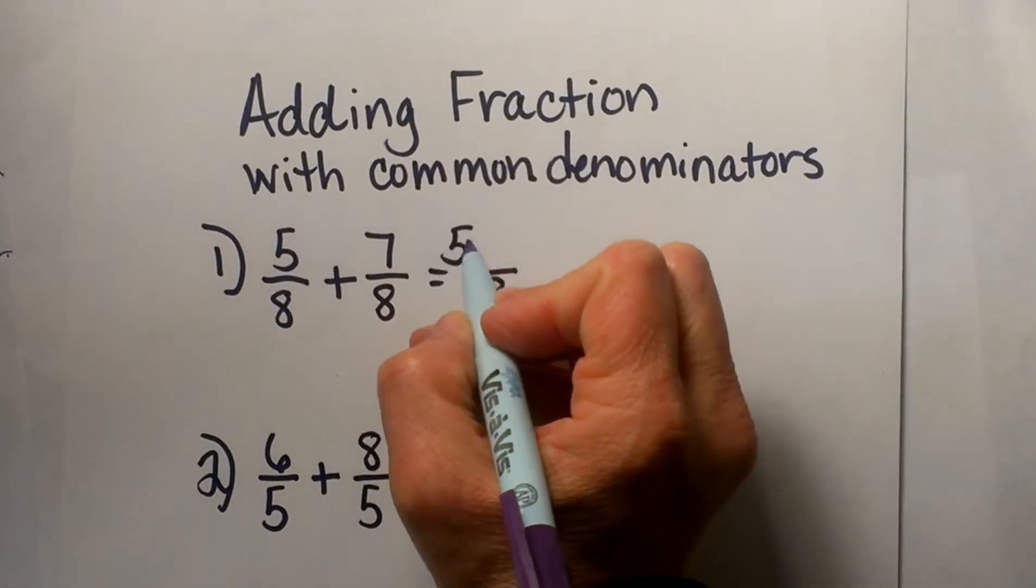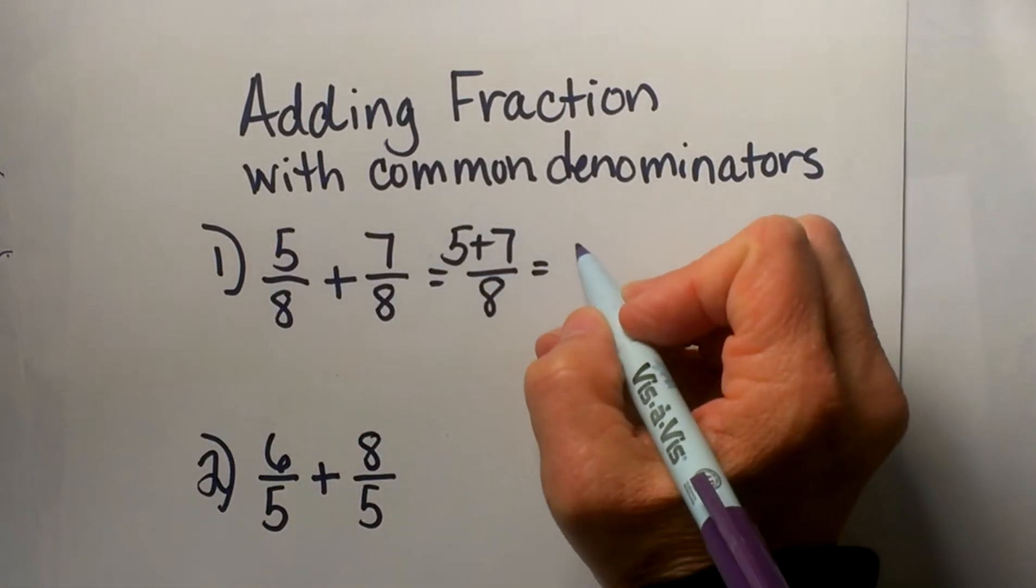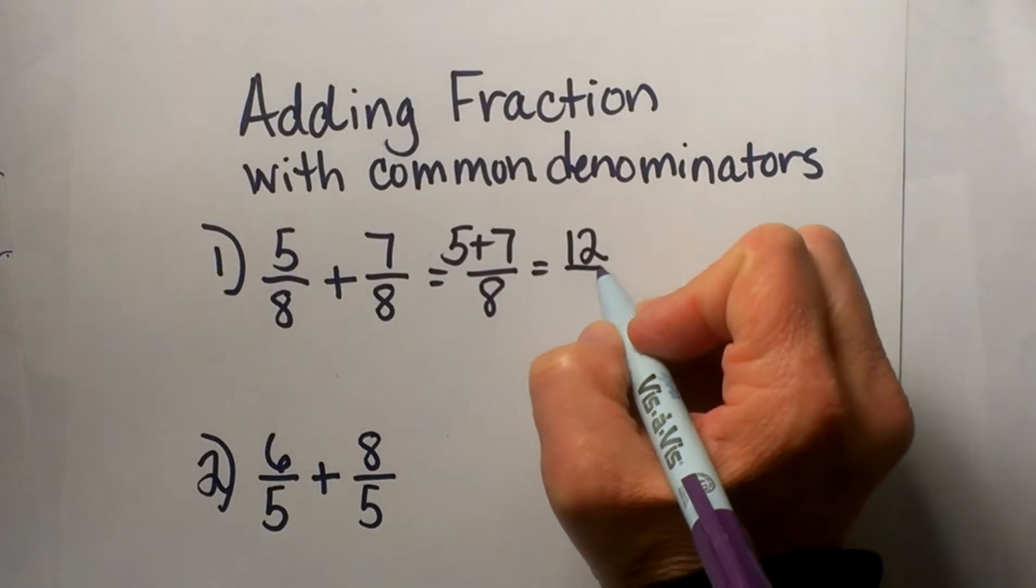So you keep it as eighths, but you add the numerator. I'm going to add 5 plus 7, so the answer I'm going to get is 12/8.